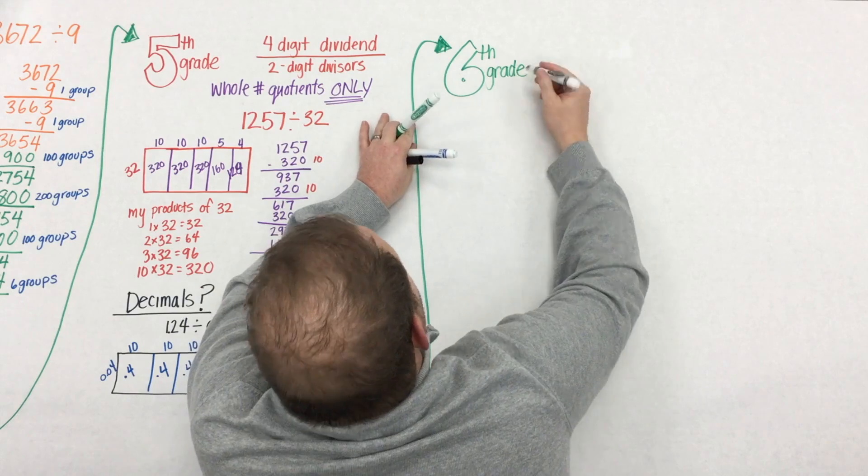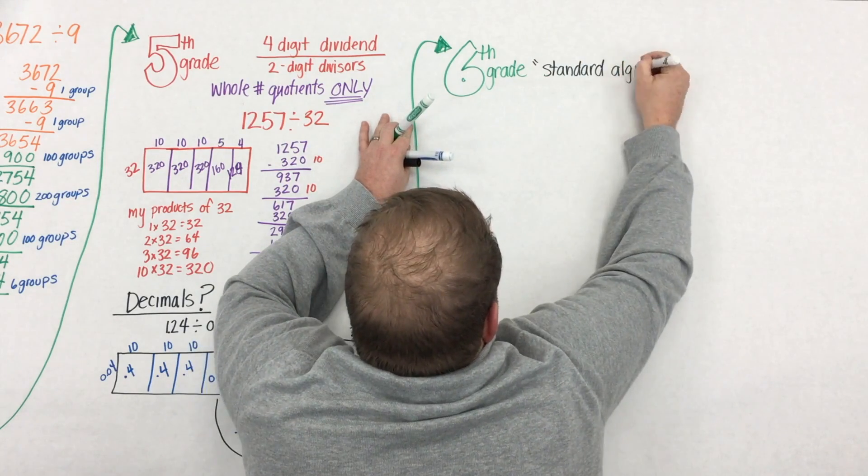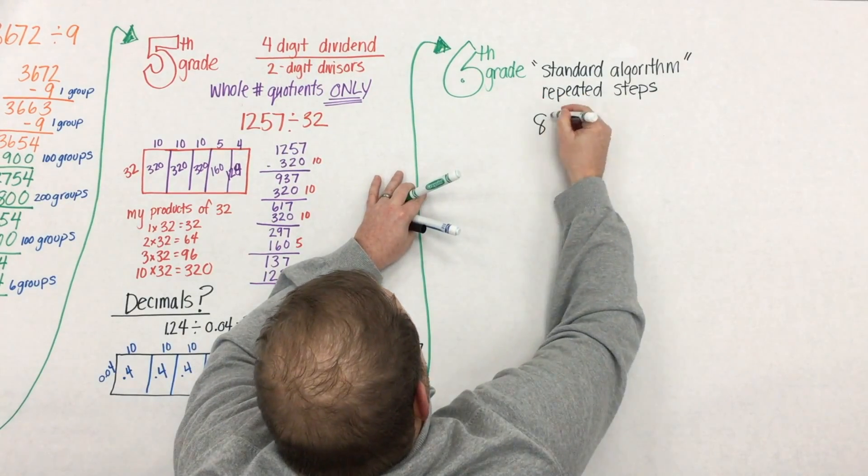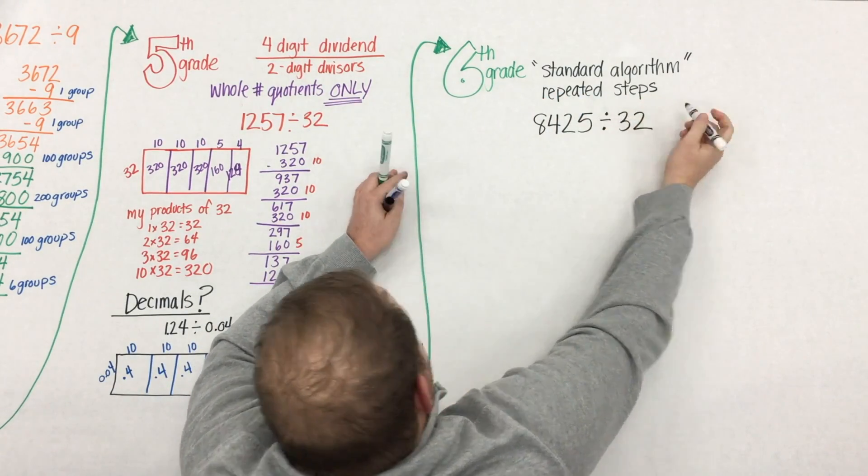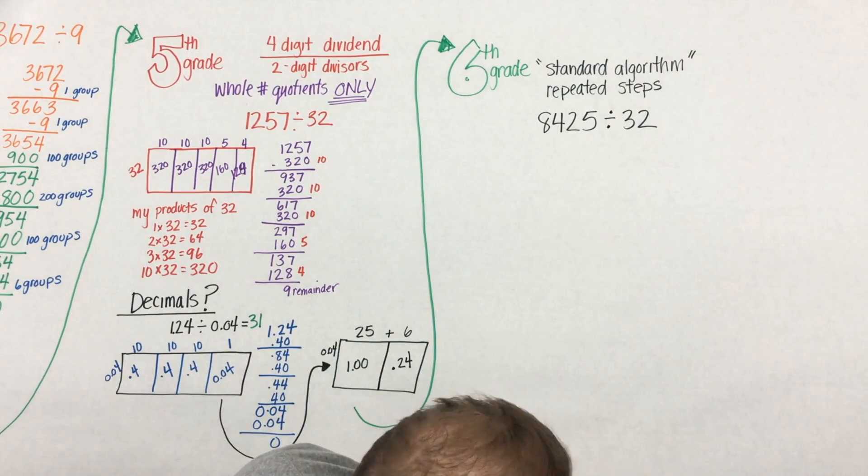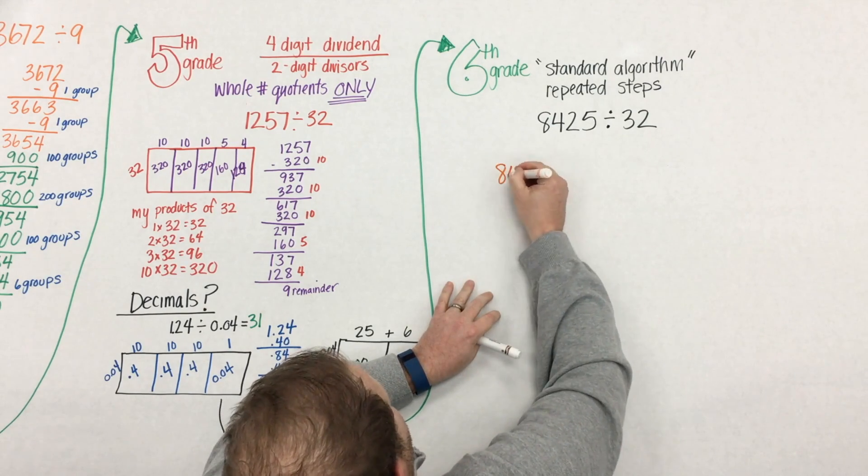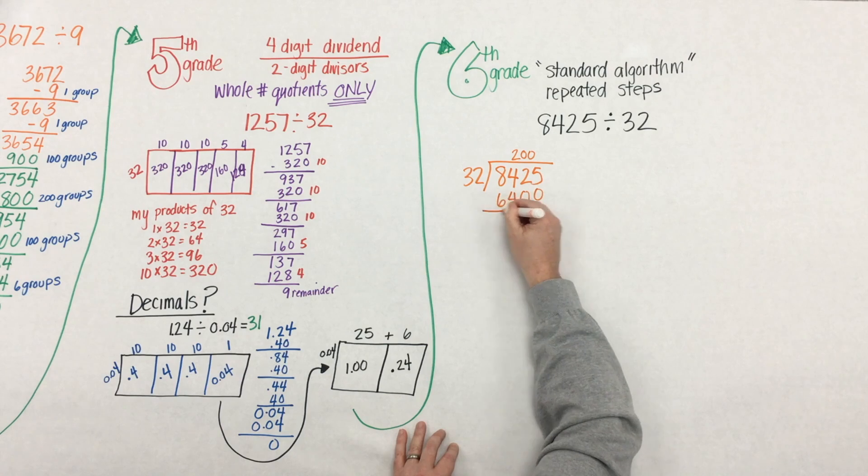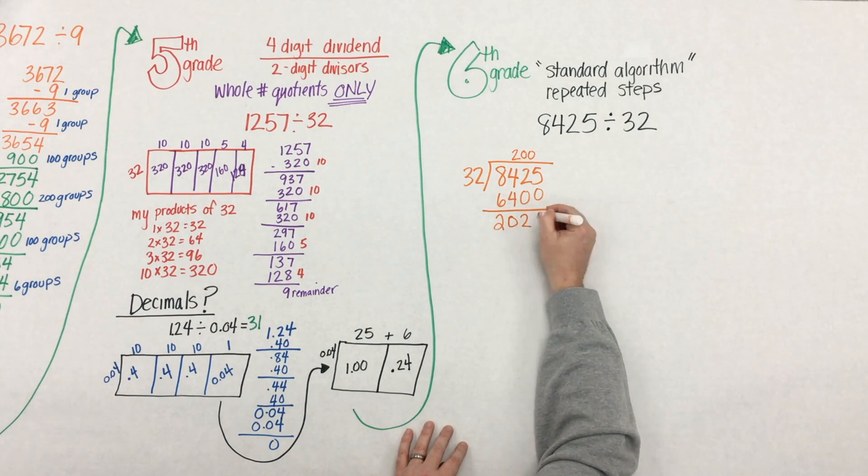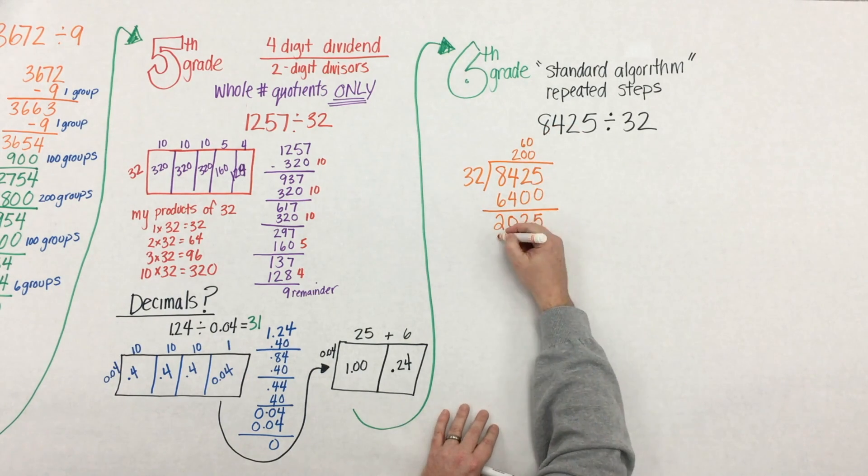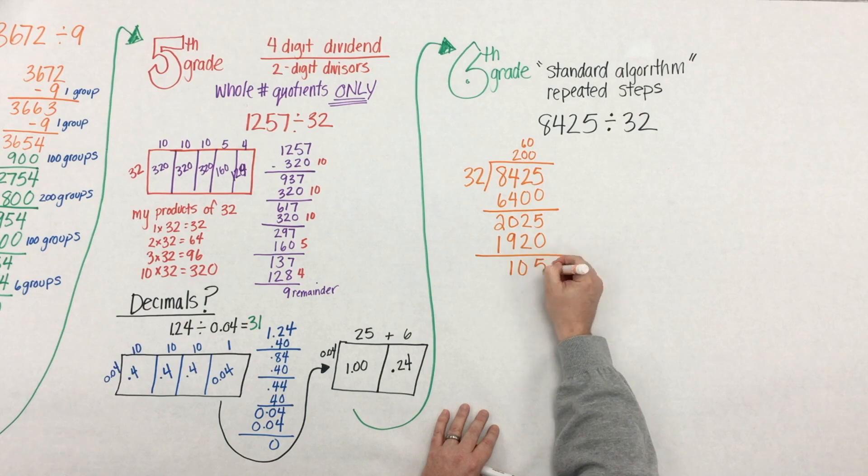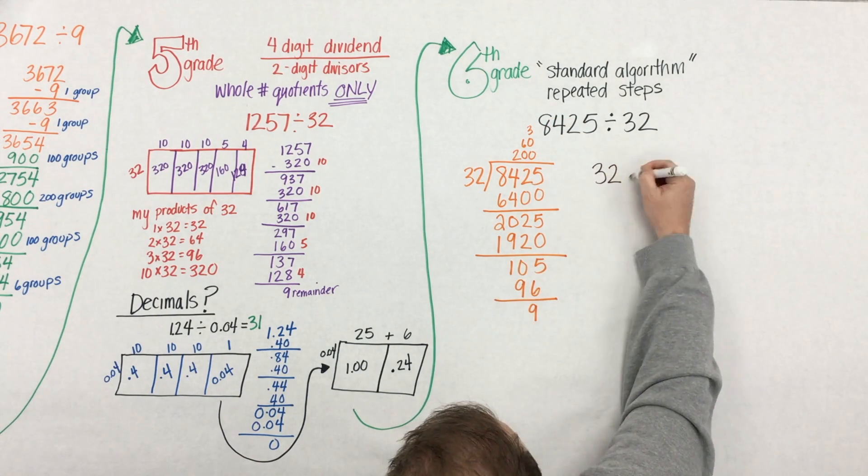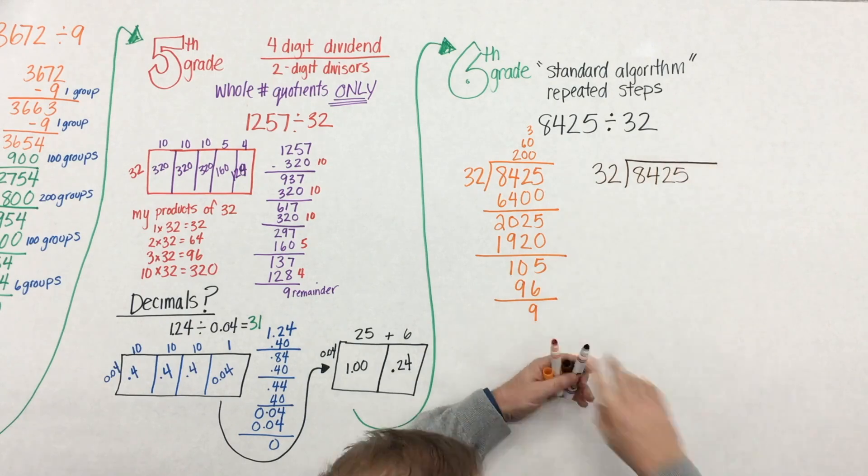Now, in sixth grade, students encounter the term standard algorithm, and all that really means is a series of repeated steps. So if students have used the same understanding of partial quotients from third grade, this is a standard algorithm. So let's see what a student might do. Well, in 8,425, I want to remove 200 groups of 32, and then 60 groups of 32, and 3 groups of 32.